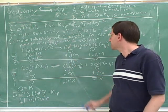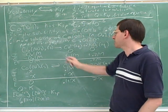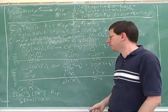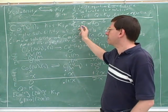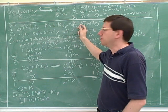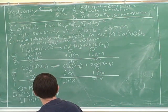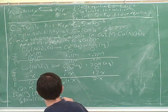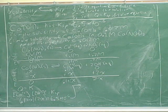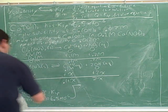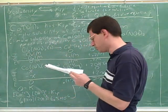Does changing the calcium concentration change the Ksp? No, because the Ksp doesn't depend on the actual calcium concentration — it depends on what the concentration would be at saturation. This is just a characteristic of calcium hydroxide; it doesn't change, so it's a constant. So we can still use that 6.5 value for Ksp. And we have to keep squaring the 2x term because of the coefficient of 2.